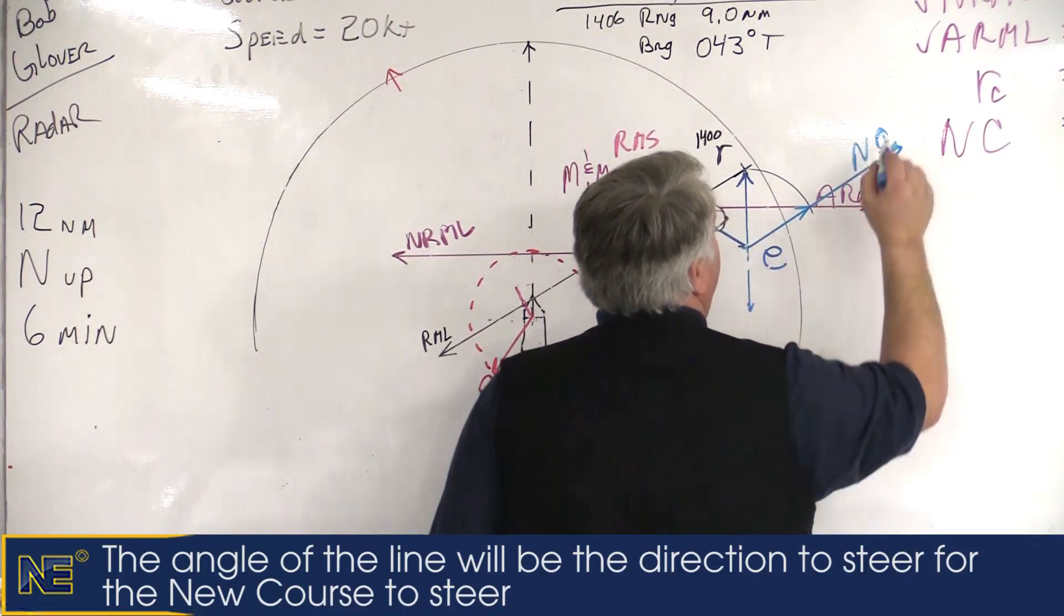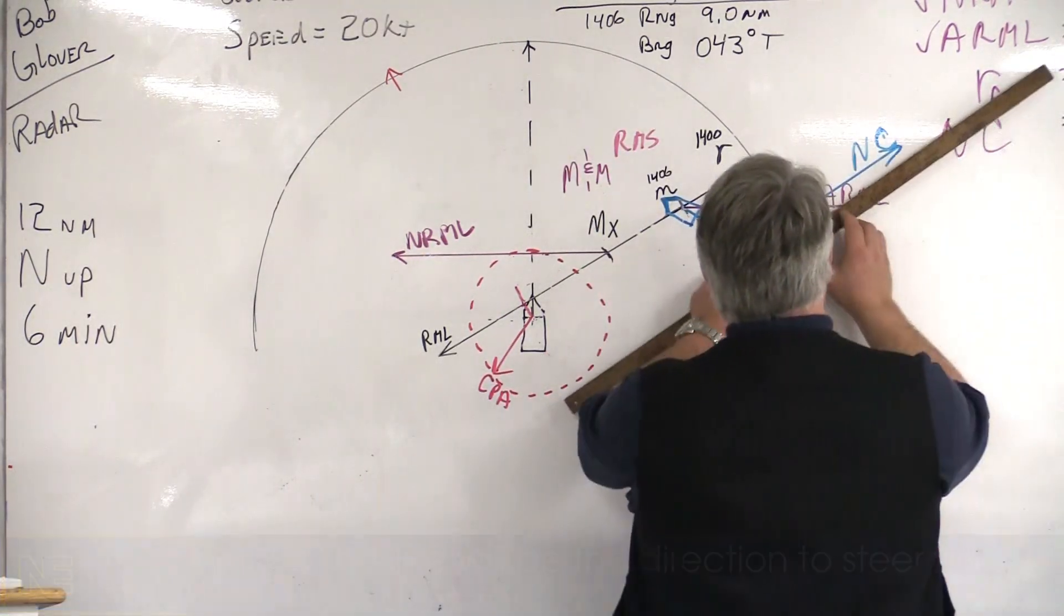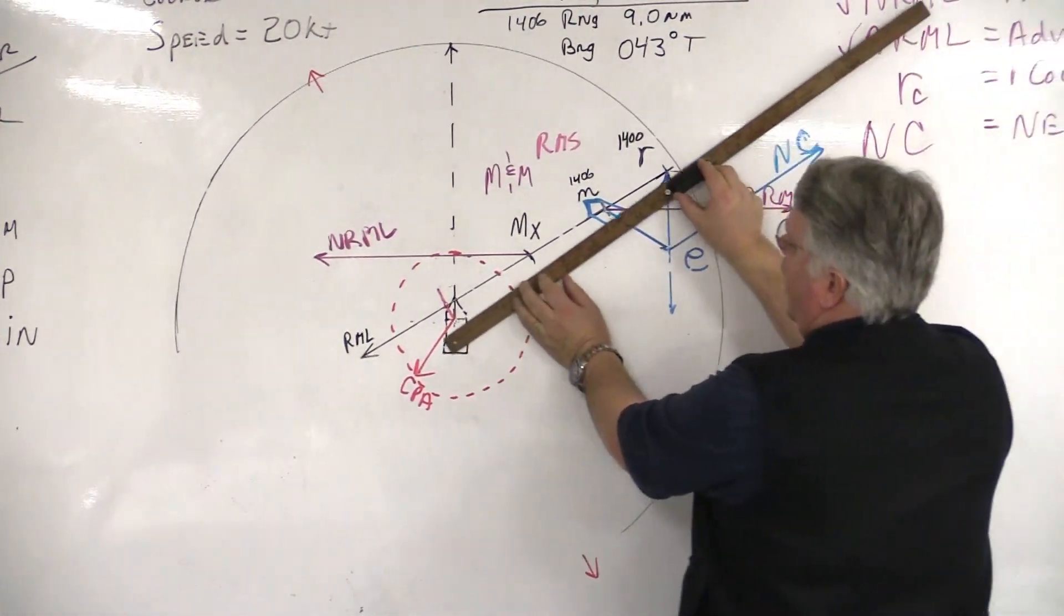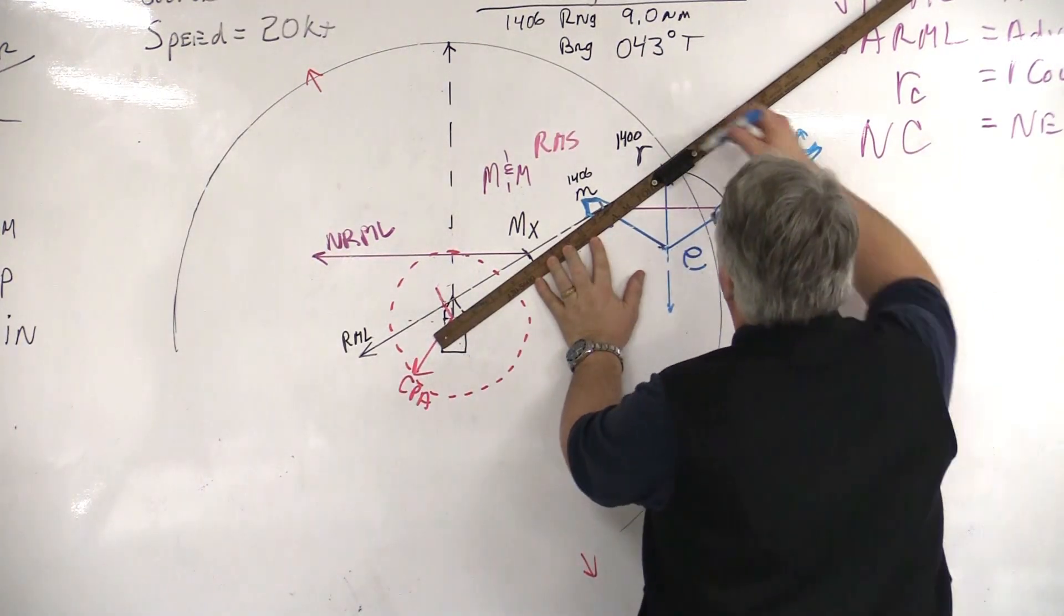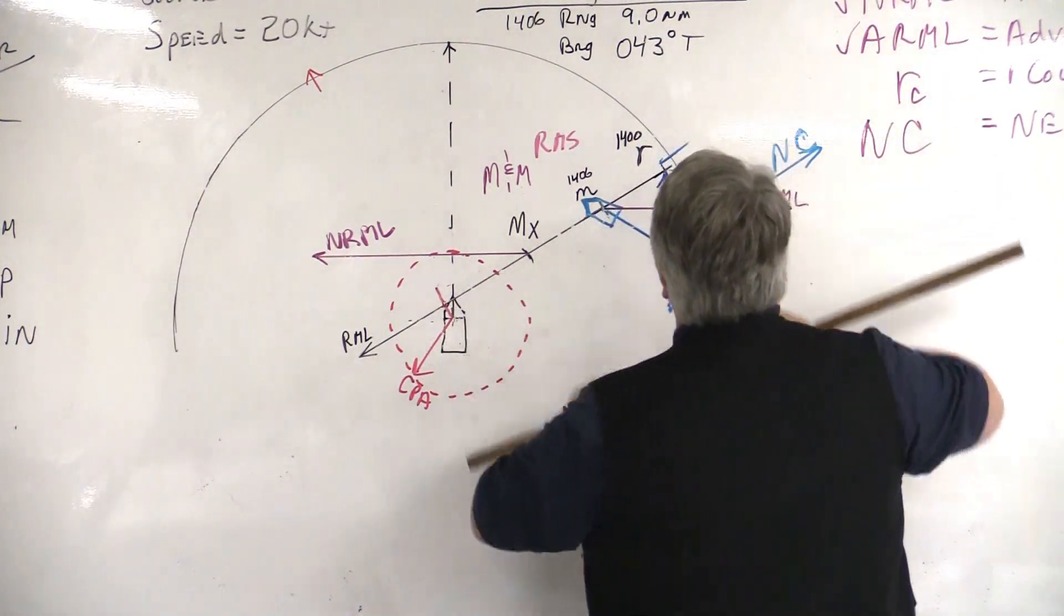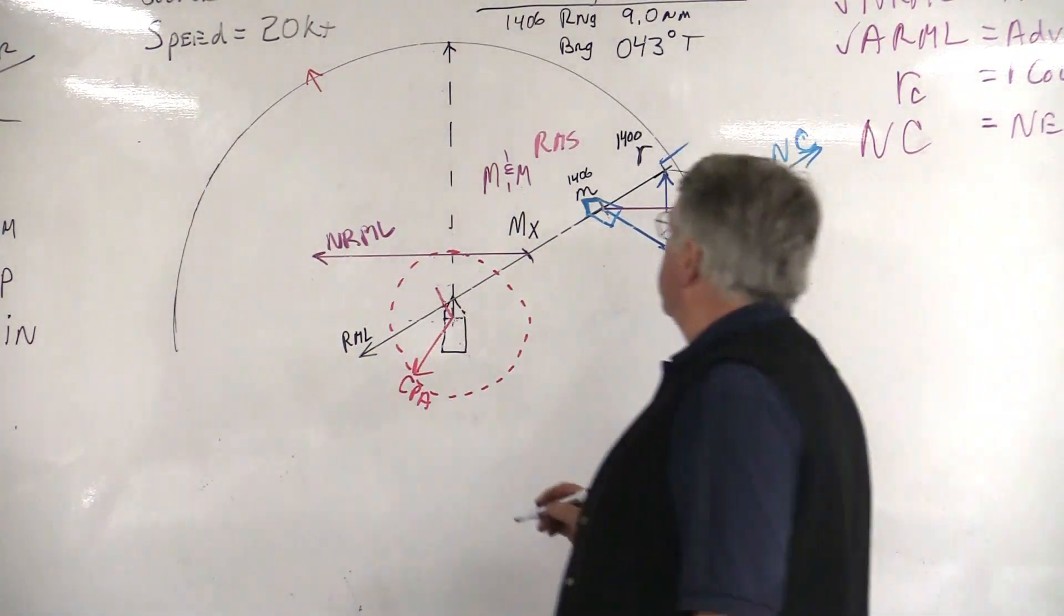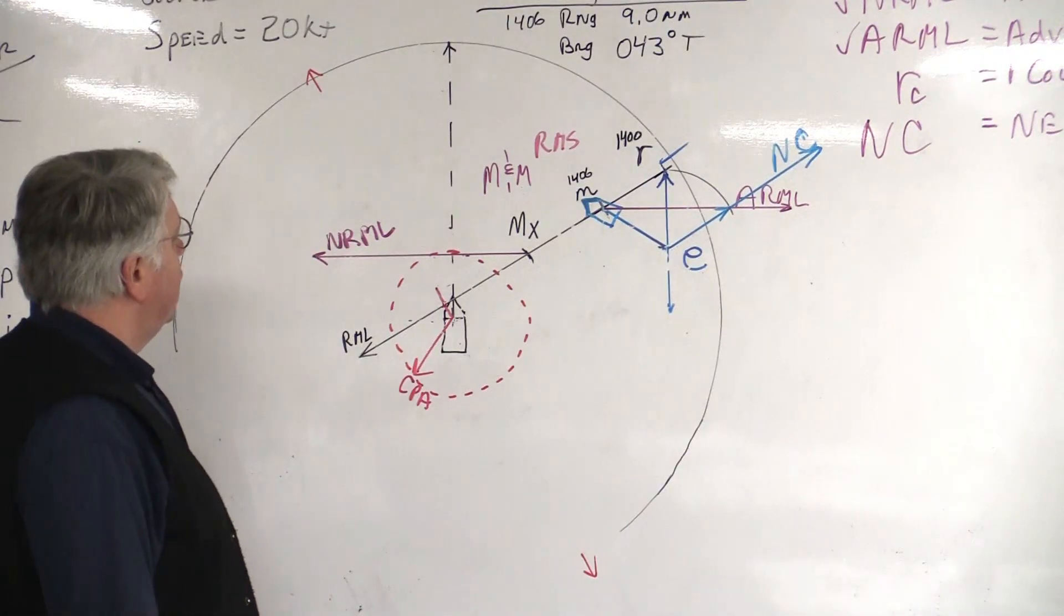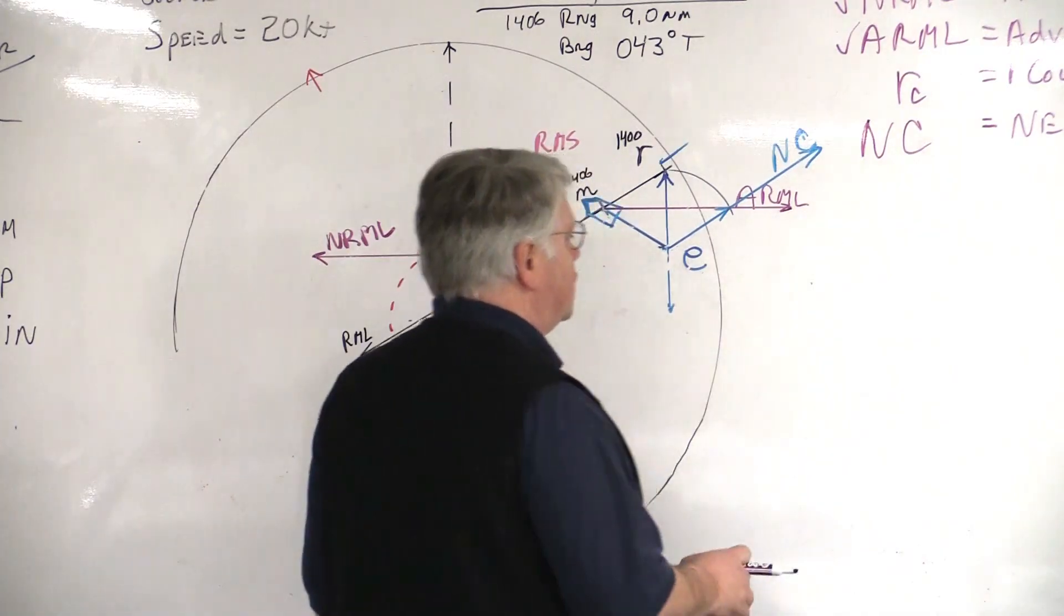This angle I've created by taking our course and speed, and changing the angle of it without changing the distance, which is our speed, until it touches the ARML. That is our going to be our new course to steer. Hence, I have labeled it NC for new course. And what we do is we take that angle, and I just slide it back up to the center of the plotting sheet, and I go ahead and just put a mark up here, and I read what it is. It should be around 043 or 044 or something like that. You can tell just graphically it's in that angle. So that's how we establish our new course to steer.